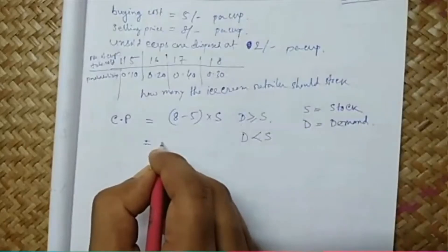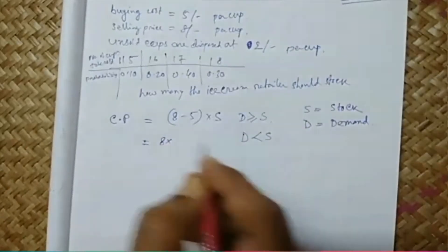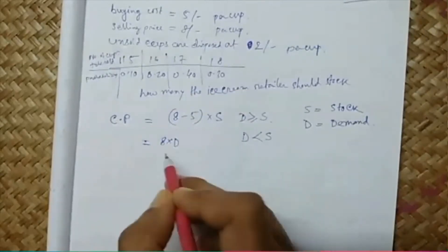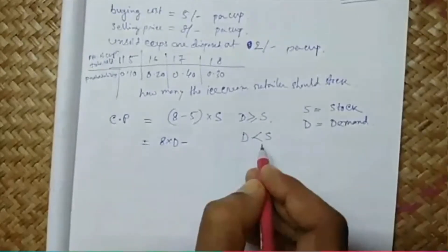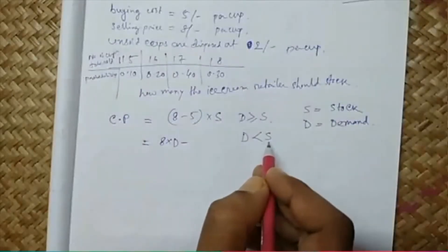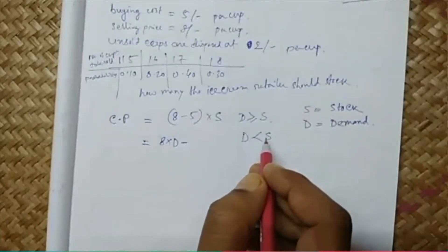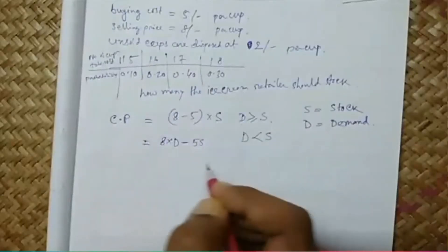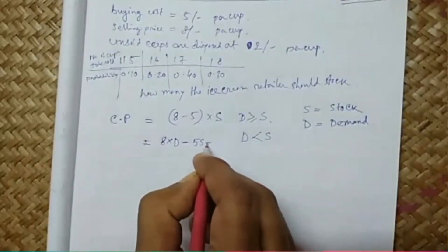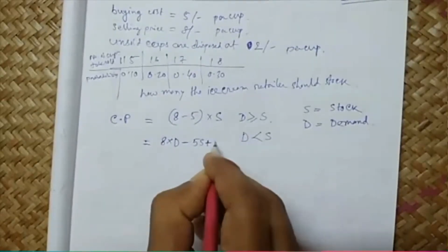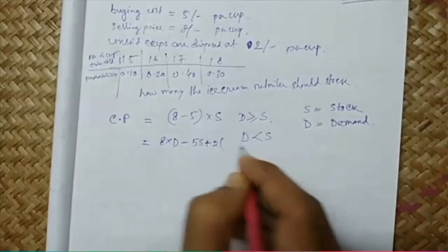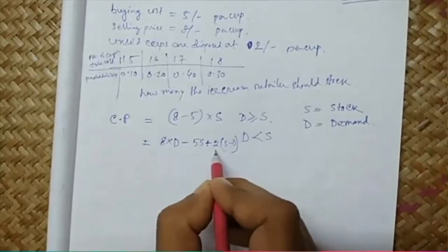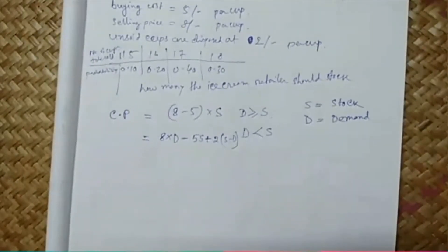When D is greater than equal to S, all stock will be sold and we get 3 rupees for each one. But situation changes when D less than S - the stock is higher, demand is lower, there will be unsold copies. In such case, payoff is 8×D - 5×S + 2×(S-D).